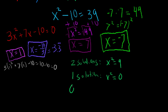Quadratic equations can also have no solutions, or zero solutions. That's when we have something like x squared equals a negative number — like negative 4. Because any number squared gives you a positive number, there are no solutions to x squared equals negative 4. For now, just think of it as: you can have two solutions, one solution, or no solutions.